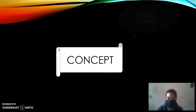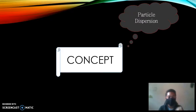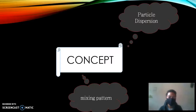So the concept of slurry loop reactor. The first one is Particle Dispersion. What is Particle Dispersion? Particle Dispersion is a collection of solid carbonous particles that will disperse into a liquid phase — that is called slurry. The mixing pattern is very intensive and well defined, so it will mix well in this type of reactor.